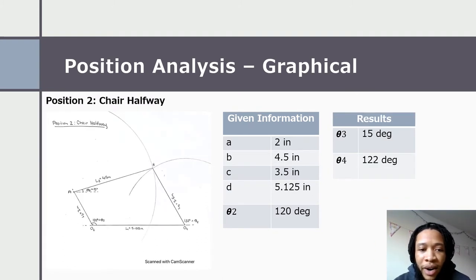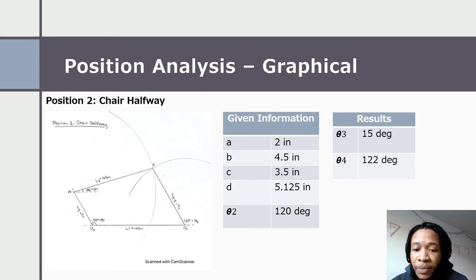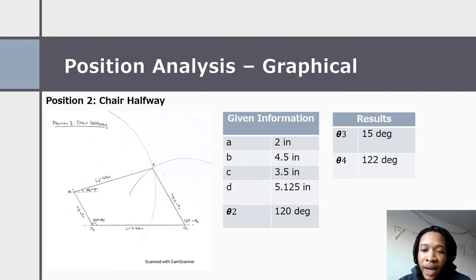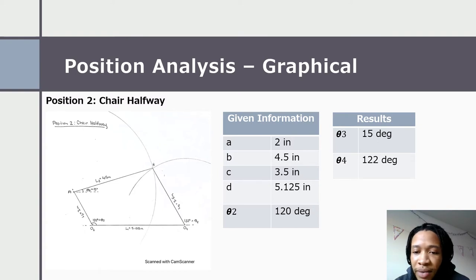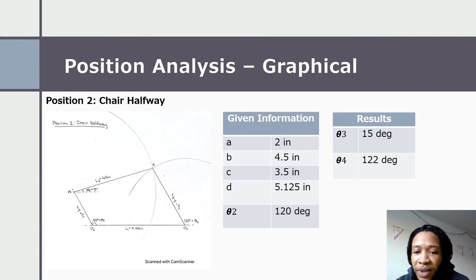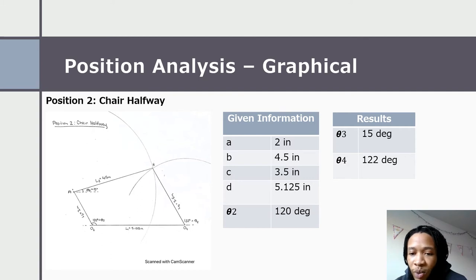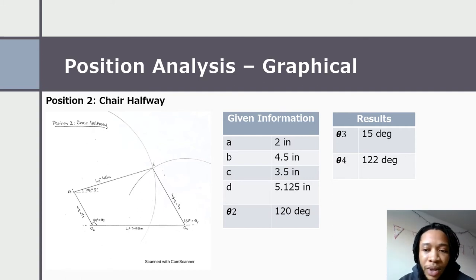Continuing on, we have our chair at the halfway position. Theta two was at 120 degrees. From our graphical calculations, theta three came out to be 15 degrees and theta four is 122 degrees.